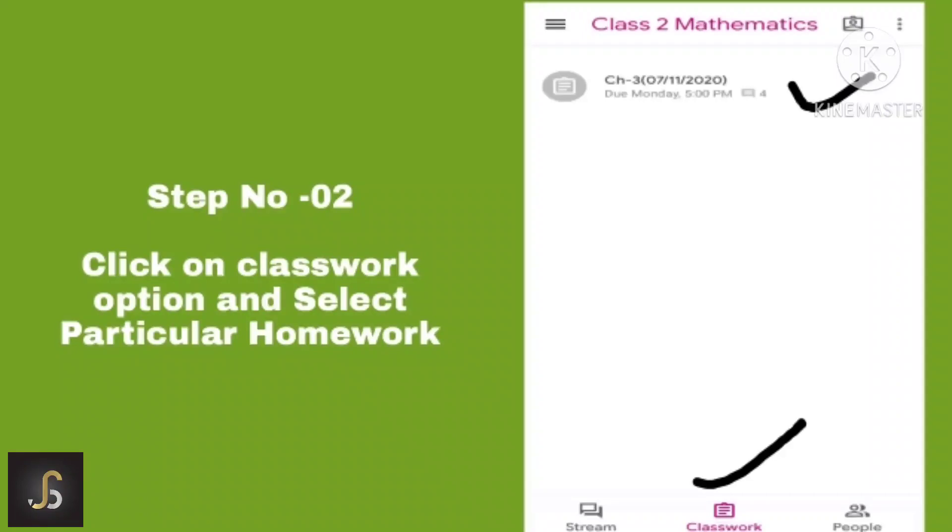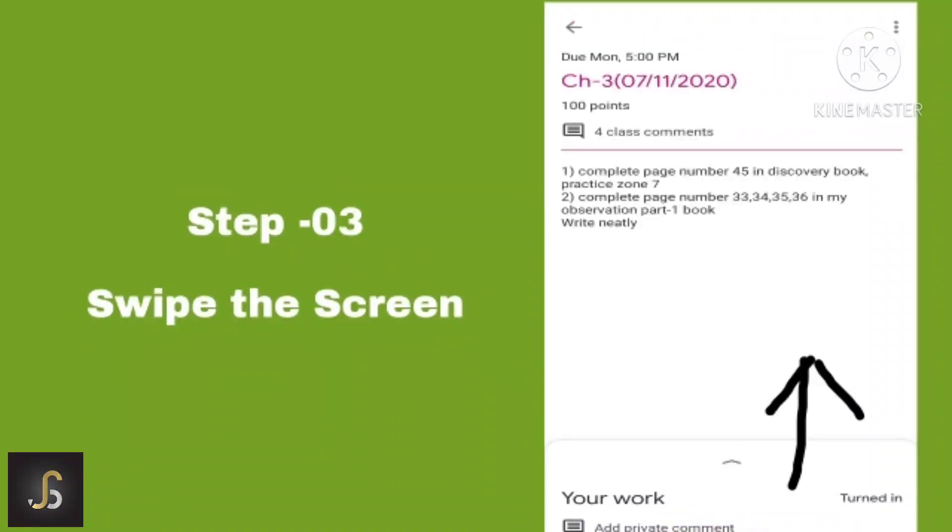Now we come up with step 3. You can see the window as seen on the screen. Here you have to just swipe upwards.